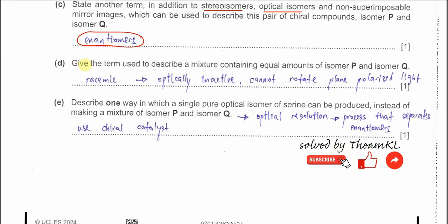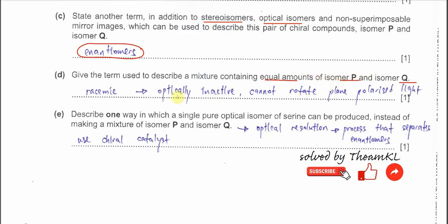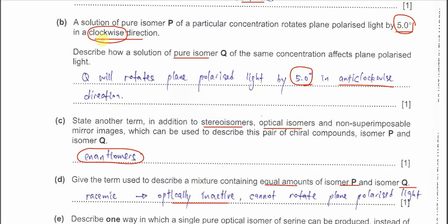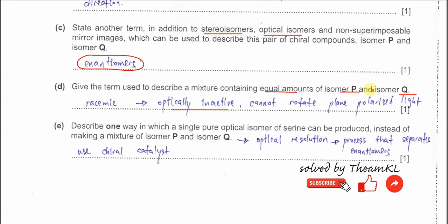Part D. Give the term used to describe a mixture containing equal amounts of isomer P and Q. Equal amounts means 50/50%. When we have equal amounts of these optical isomers, this mixture is optically inactive. Why? Because P rotates 5 degrees clockwise and Q rotates 5 degrees anticlockwise — when we have the same amount, they cancel out. So it is optically inactive; it cannot rotate plane polarized light. The name for this mixture is a racemate.